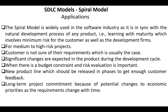The spiral model is widely used in the software industry as it is in sync with the natural development process of any product, i.e., learning with maturity, which involves minimum risk for the customer as well as the development company. It is also suitable for medium-to-high-risk projects if the customers are not sure of their requirements, which is usually the case. It is also applicable when significant changes are expected in the product during the development cycle, when there is a budget constraint and risk evaluation is important. New product lines should be released in phases to get enough customer feedback, and long-term project commitment because of potential changes to economic priorities as the requirements change with time.